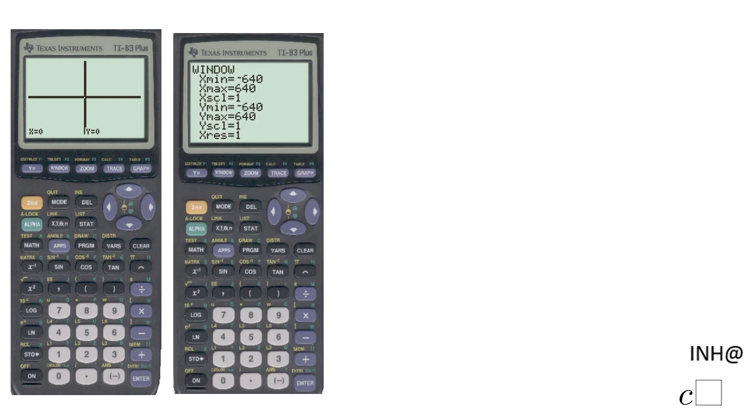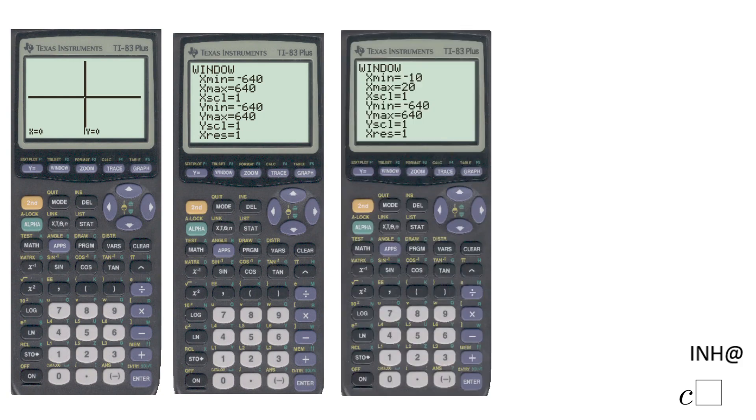The reason we have something like this: the window is too large. If you notice, x min negative 640, x max positive 640, the same for the y's. So what I'm going to do now, I'm going to adjust just the x. Take a look here, I adjust the x in this way: the x min negative 10, the x max 20.